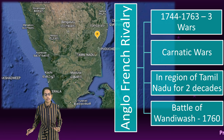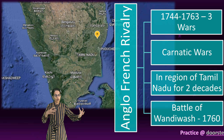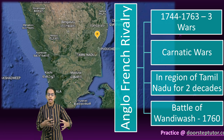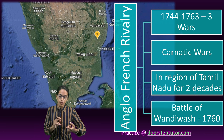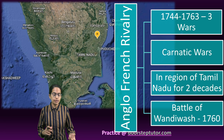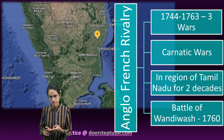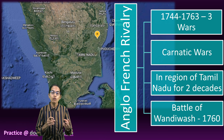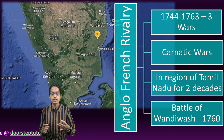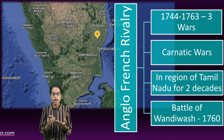As we had understood, three important foreign establishments in India were the Portuguese settlements, the French settlements and the English settlements. However, there was a war between the English settlements and the French colonies.